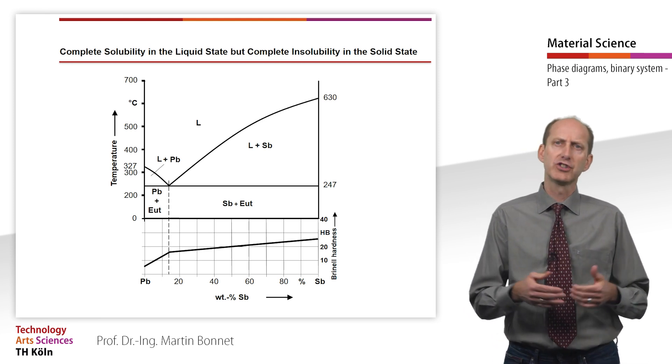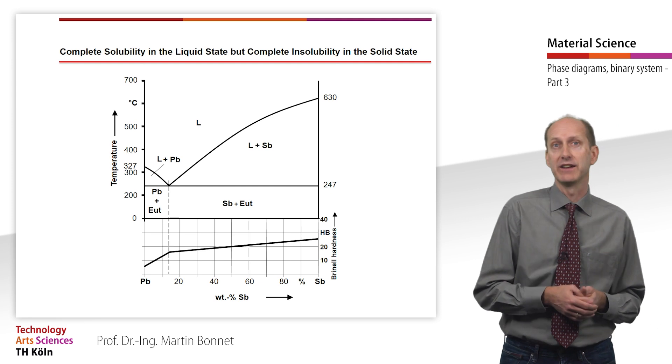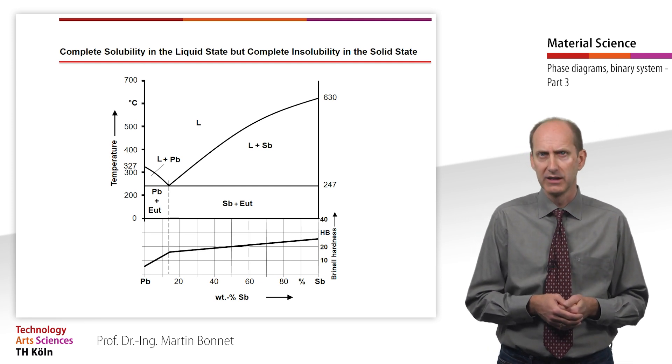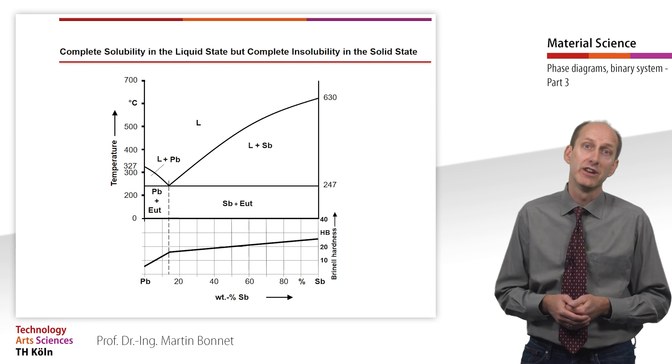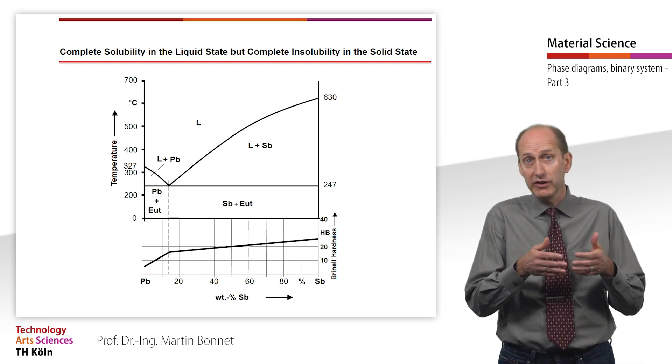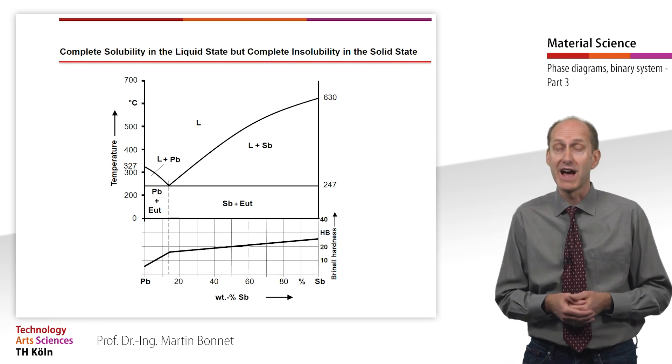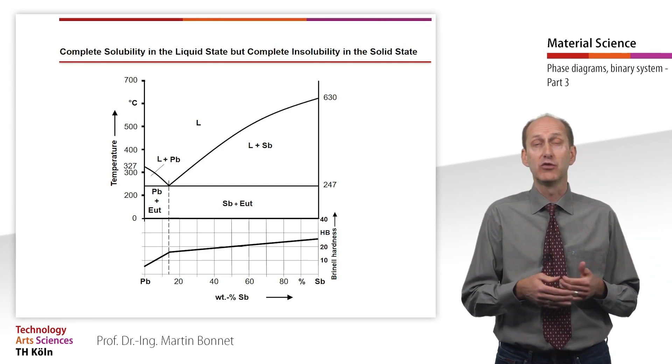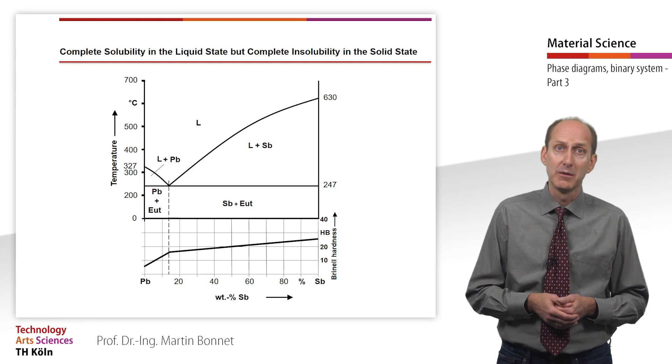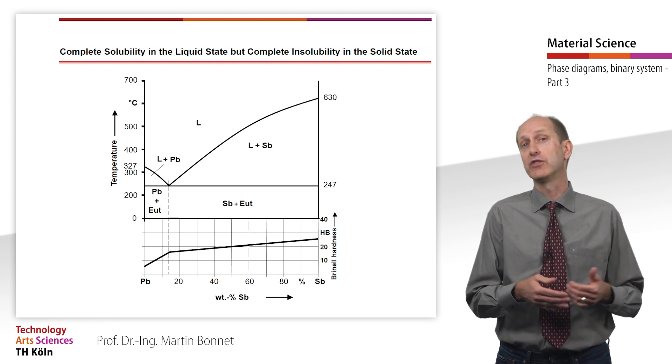This figure shows the Brinell hardness as a function of the antimony content. It can be seen that there is an overproportional increase in hardness up to the eutectic, which means that the hardness of lead can be increased by the factor 3 by the addition of only 13% antimony.